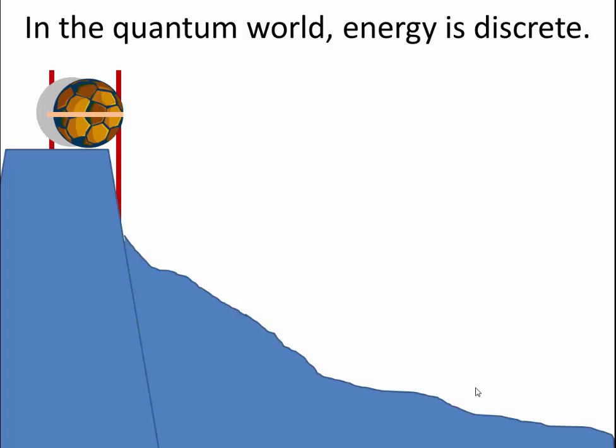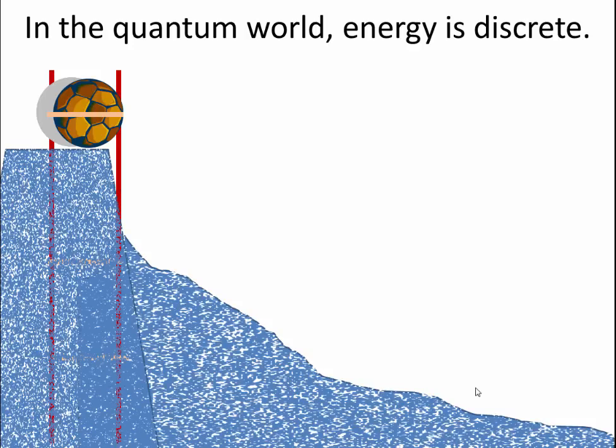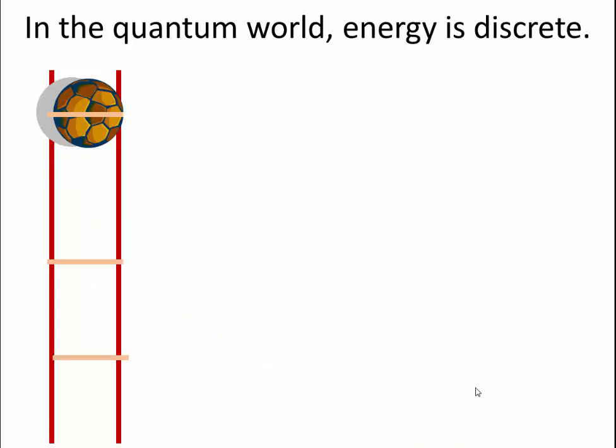Now in the quantum world, in the nuclear world, energy is discrete. It doesn't work like this. What we find, energy is like only rungs on a ladder. So this ball can fall down to this rung, or that rung, but nowhere in between. So this is what we mean by discrete. It can be this energy drop, or that energy drop. Let's look at one.